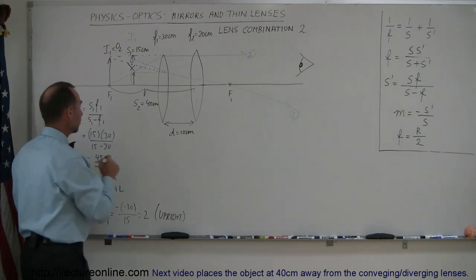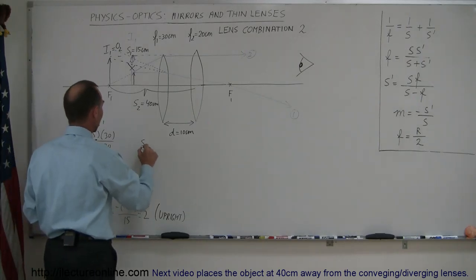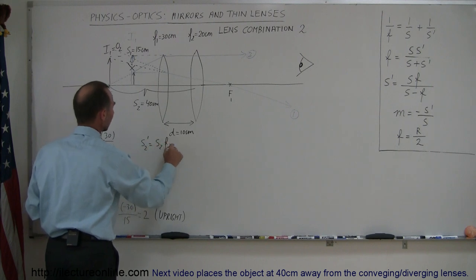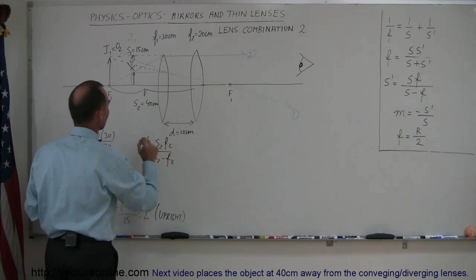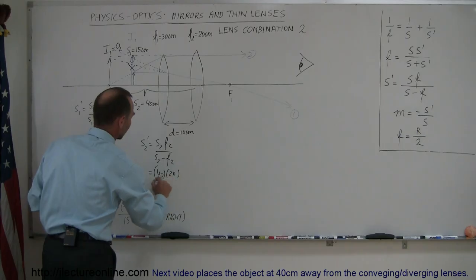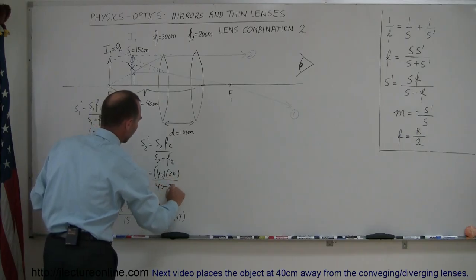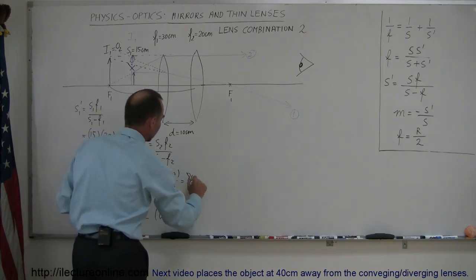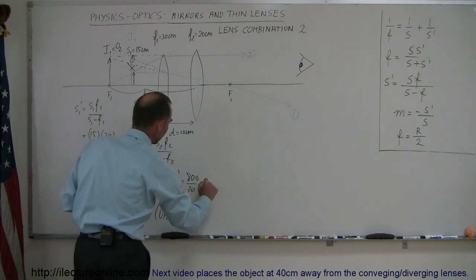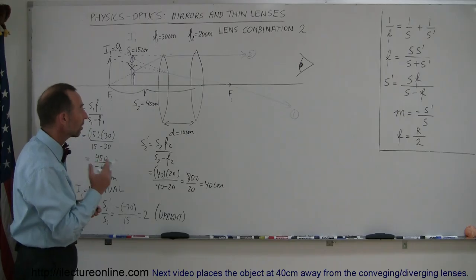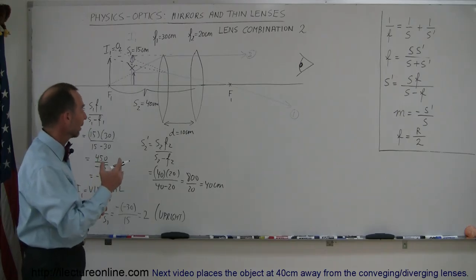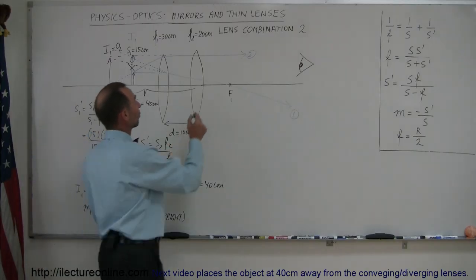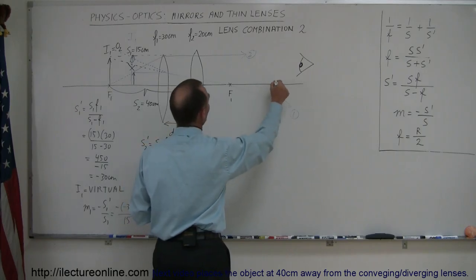Now going ahead and using the same equation, except we use subscripts 2 now, so we have S2' equals S2F2 divided by S2 minus F2, and so that's equal to S2 is now 40, F2, the focal length of the second lens was 20 centimeters, divided by 40 minus 20, so this is equal to 800, over 20, which is equal to a positive 40 centimeters, which means that the second image forms 40 centimeters behind the second lens, so 40 centimeters, that would be about here.